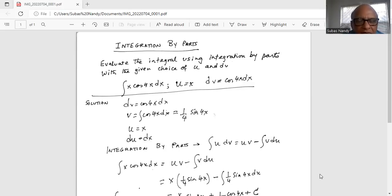So dv is equal to cosine 4x dx given. So we integrate both sides to get v equal to integration of cosine 4x dx which is one-fourth sine 4x.